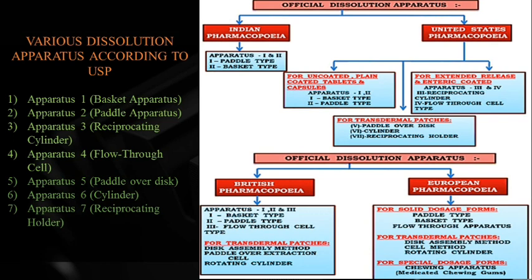USP Apparatus 3 (reciprocating cylinder) and 4 (flow-through cell) are used for extended-release and enteric-coated tablets. Apparatus 5, 6, and 7 are used for transdermal patches. British Pharmacopoeia: Apparatus 1 is basket, 2 is paddle, 3 is flow-through cell; for transdermal patches they use disc assembly, paddle over extraction cell, and rotating cylinder. European Pharmacopoeia uses paddle, basket, and flow-through cell for solid dosage forms, and disc assembly, cell method, and rotating cylinder for transdermal patches.